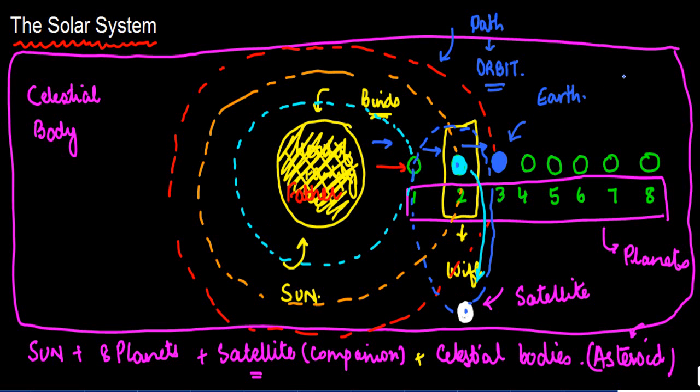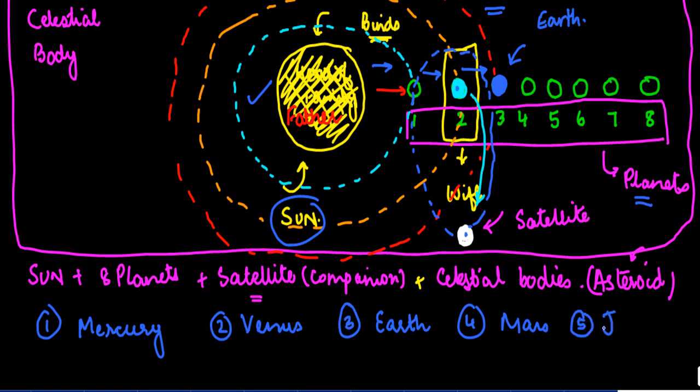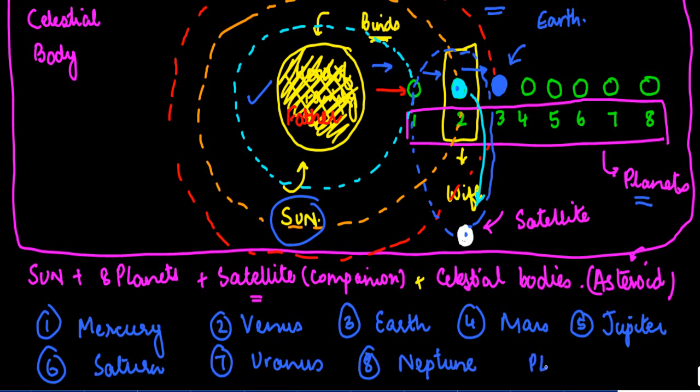This entire solar system comprises of the Sun and the eight planets. If I talk about them in terms of their names according to their distance: the first one is Mercury, second is Venus, third is Earth, fourth is Mars, fifth is Jupiter, sixth is Saturn.